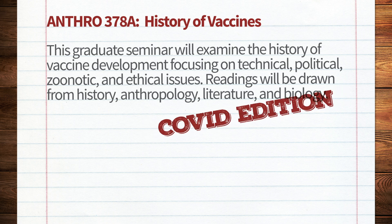The history of vaccines is virtually always presented as one of unalloyed scientific progress, starting with Edward Jenner and smallpox and moving from success to success to success. But the great man theory of development in any scientific endeavor misses a lot about how social relationships are encoded in science and medicine.